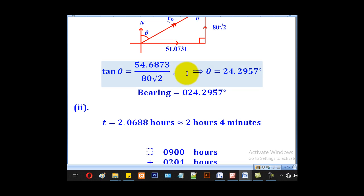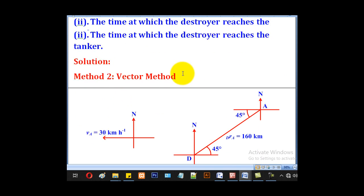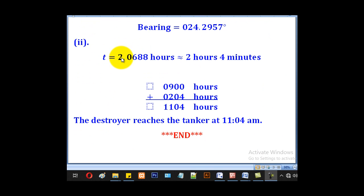For part (ii), they wanted the time at which the destroyer reaches the tanker. Since we already found T as 2.0688 hours, we convert it to 2 hours and 4 minutes. We add it to the starting time of 9:00 AM to get 11:04 AM. So the destroyer reaches the tanker at 11:04 AM. That has been our lesson for today.